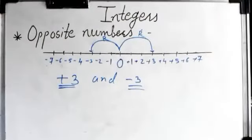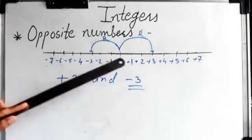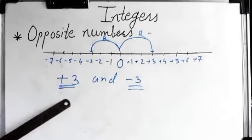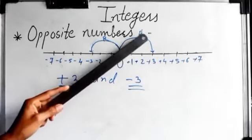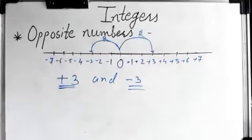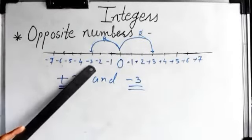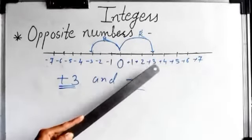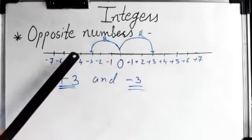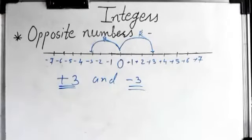Opposite numbers means they are at the same distance from zero, but in opposite directions. One is to the right side of zero, and with the same number of units, the other is to the left of zero — that means they are opposite numbers.